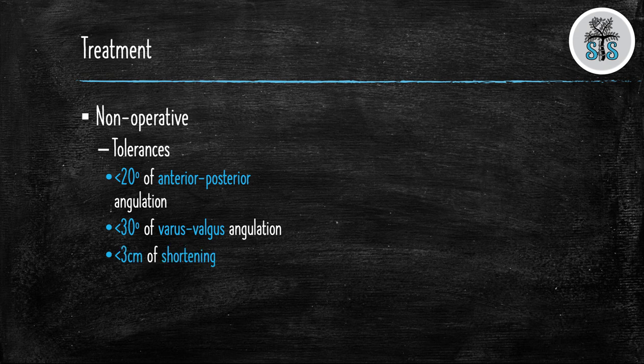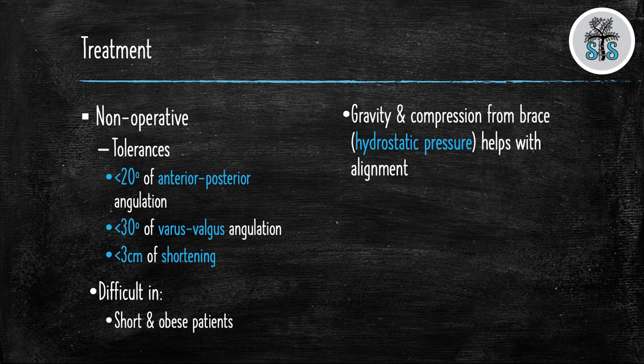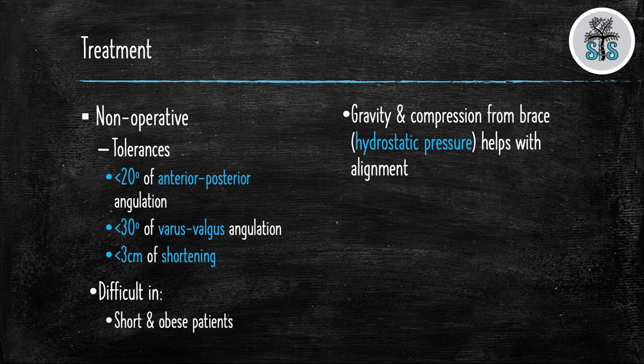Conservative therapy will be difficult in those who are obese and short. When you place these fractures in a brace, the combination of gravity in the brace causes an increase in hydrostatic pressure which helps with fracture alignment. These fractures have a high rate of union exceeding 90 percent with conservative care. On average union occurs 9 to 14 weeks after the injury.